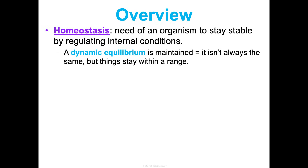Things aren't always exactly the same. Think of your body temperature — it is not always 98.6 degrees Fahrenheit. It fluctuates. But as long as it stays within a given range, you're considered to be okay and not have a fever or anything like that. That's how homeostasis works as well. Things don't stay static; they fluctuate, but as long as they're maintained within certain ranges, everything is all good.